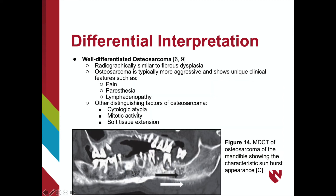A well-differentiated osteosarcoma can also be included in the differential interpretation. The two lesions are very similar radiographically. However, osteosarcomas are often more aggressive. Because an osteosarcoma is a malignant lesion, some clinical features may be experienced by the patient, such as pain, paresthesia in the area, or lymphadenopathy. Osteosarcomas will also show mitotic activity, cytologic atypia, and possibly soft tissue extension.